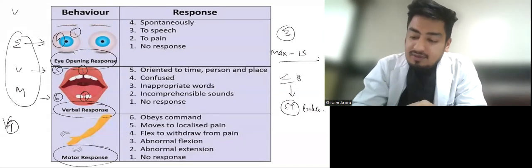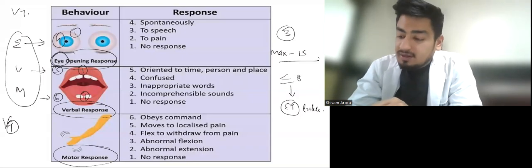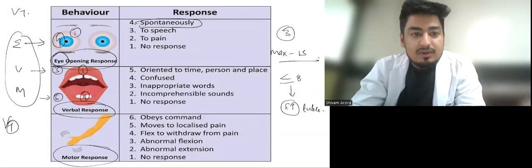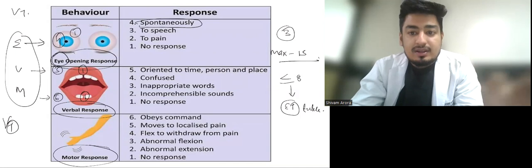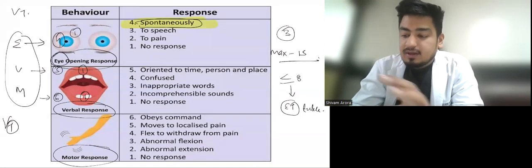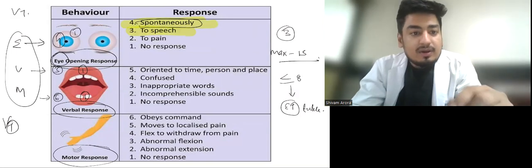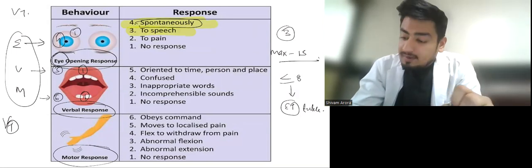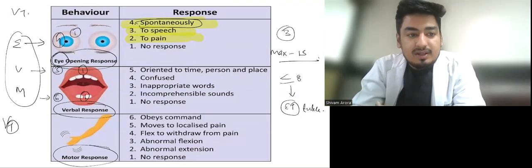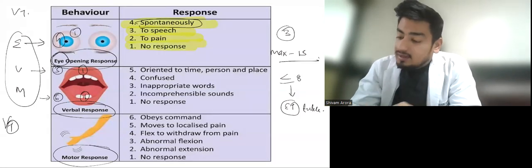In eye opening response we have four scores. If the patient opens the eye spontaneously, that is spontaneous, that is four. Three means to speech, when you call the patient then they open their eyes, not on their own. Two is to pain, when pain stimulus is there then the patient opens their eyes. And no response is one.